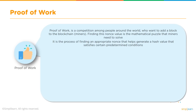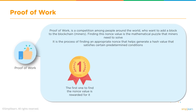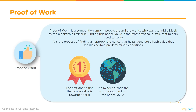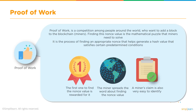What is proof of work? Proof of work is a competition amongst miners around the world who are constantly working on a public blockchain network and want to add a block to the blockchain. They are constantly working to find the nonce value, which is the mathematical puzzle the miner needs to solve. It is the process of finding an appropriate nonce that generates a hash value satisfying certain predetermined conditions called the target. The first miner to find the nonce value gets rewarded, and spreads the word among all other miners — a miner's claim is also very easy to verify.